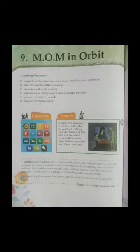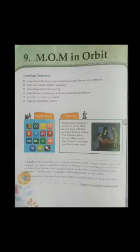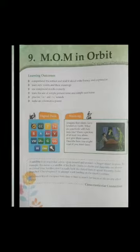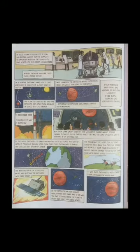So students, including those topics, we have read about India and explained the summary of stanzas one to three, which is on page 79 of Chapter 9, Mom in Orbit. Today's topic is the summary of page number 80 of this Chapter 9, Mom in Orbit.